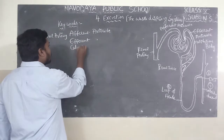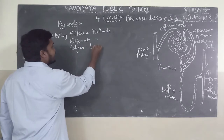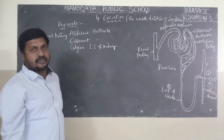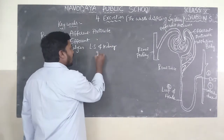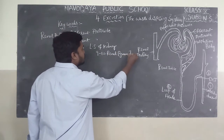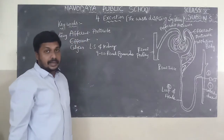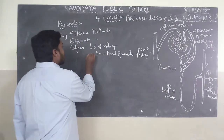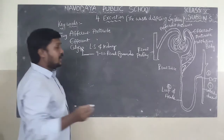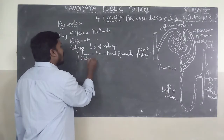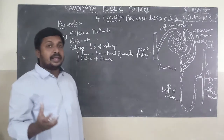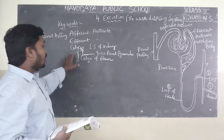Next keyword is calyces. If you observe the longitudinal section of the kidney, we can find out 9 to 12 renal pyramids. There we can find a structure called calyces. They get this name because they look like the calyx of a flower.